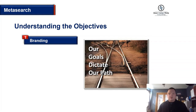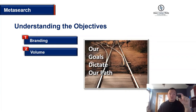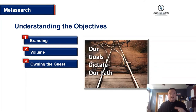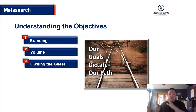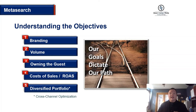Objective number one could be branding — making sure your direct booking link appears every time someone searches for your property, including non-branded search terms. Maybe it's about volume — getting as much traffic as possible. Owning the guest, like the casino resort example, wrapping arms around the guest with pre-stay, during-stay, and post-stay plans. Cost of sale and return on ad spend — making sure your cost of sale is lower than what you're paying to an OTA. And generally diversifying your portfolio.